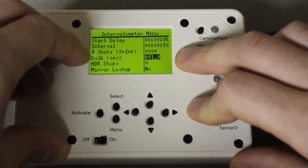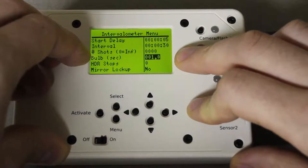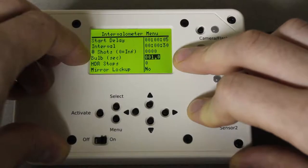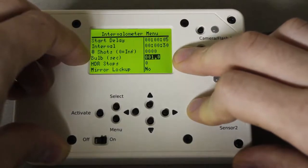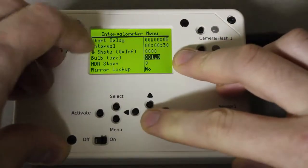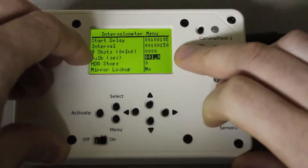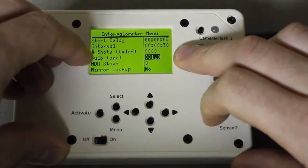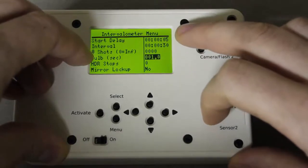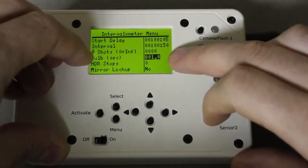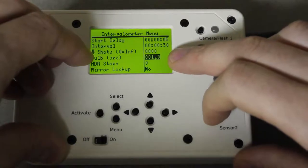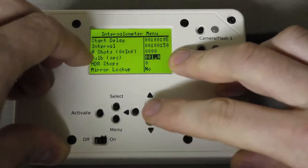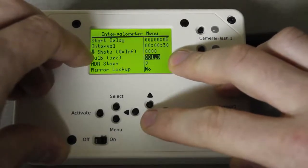The reason it doesn't go any faster than 0.1 seconds is because bulb mode on most cameras doesn't work with really short durations. So unfortunately this is sort of a limitation that most cameras have. But I've used this for taking photographs of starry nights and things where I want to take a picture every two minutes and I want the shutter to be open for 45 seconds. This will work great in those kinds of situations.